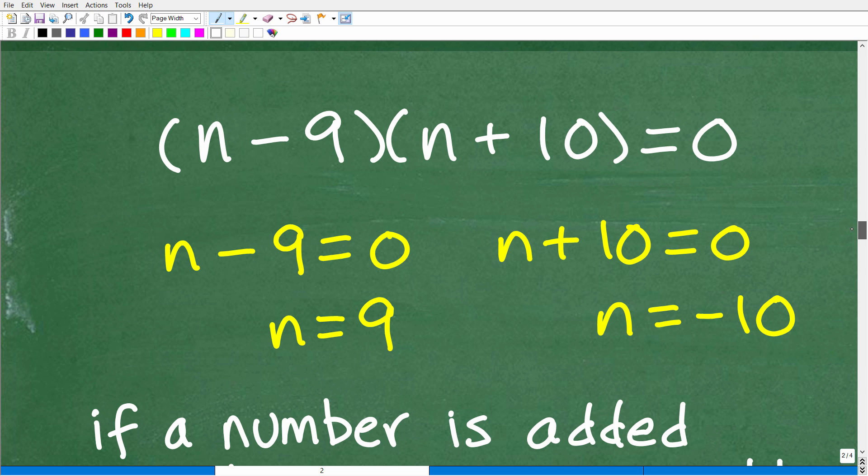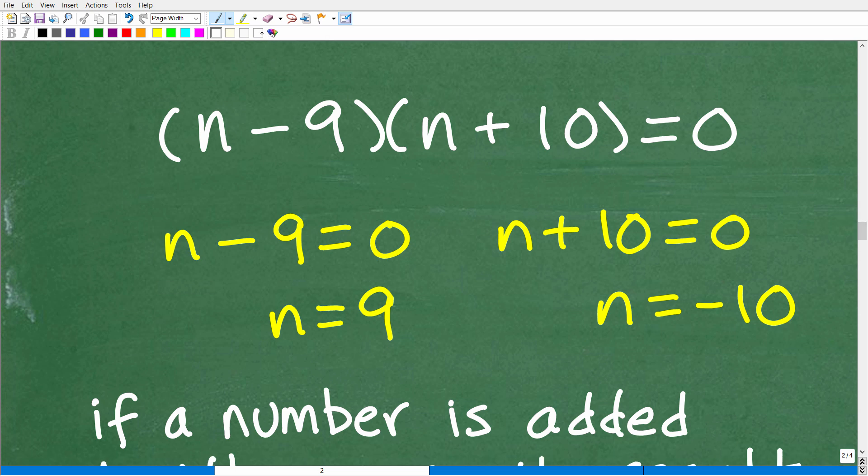Now that we have this thing factored, N minus 9 times N plus 10. This thing times this thing is equal to zero. This is why we set these quadratic trinomials or polynomials equal to zero, because think about it. We have one thing being multiplied by another thing. If I said to you, I have two numbers, and when I multiply them together, the answer is zero, you would say, oh, that's pretty cool. What are the numbers? You'll say, I don't know, but one of the numbers must be zero. You can't multiply two numbers together and get zero as an answer unless one or both of those numbers are zero. That is the zero product property.